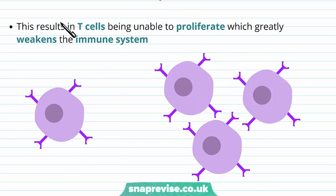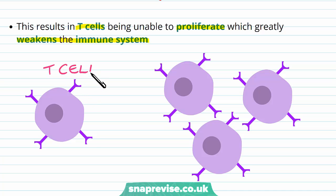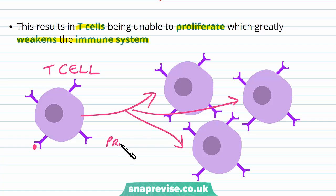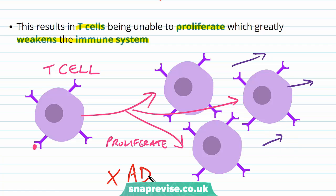The problem with this mutation is that T cells, which are involved in the immune system, aren't able to proliferate, and this weakens the immune system. Normally, when a T cell recognizes a particular pathogen, it would divide or proliferate into many different T cells which can tackle that pathogen as one big army of cells. In this mutated version of ADA, which doesn't work anymore, this process can't happen, which means the immune system can't fight off pathogens.